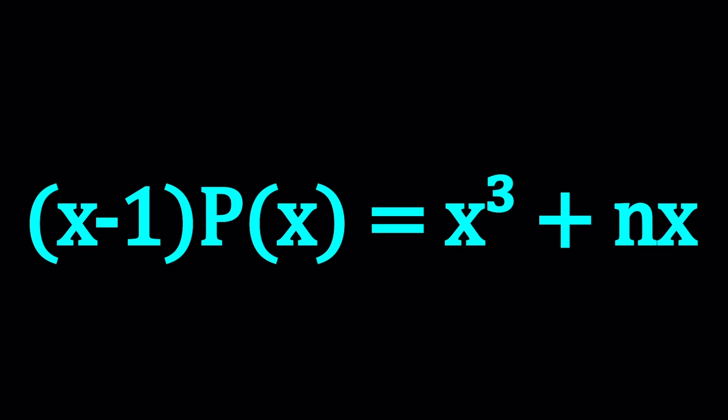Anyways, we have a polynomial equation, x minus 1 multiplied by p of x, which is a polynomial, equals x cubed plus nx. And we're going to be solving for what? Good question, right?